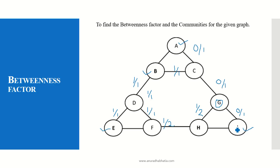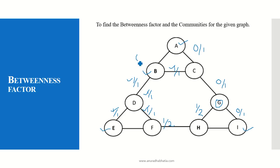To find the betweenness factor for node B, we count all the values. The betweenness factor for node B is: 1 + 1 + 1 + 1 + 1 (five paths with value 1) plus 0.5 plus 0.5, which equals 6. So the betweenness factor for node B is 6.